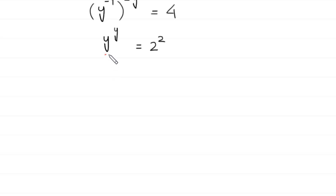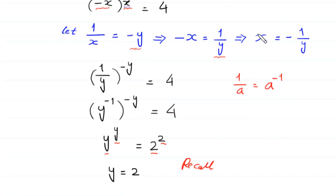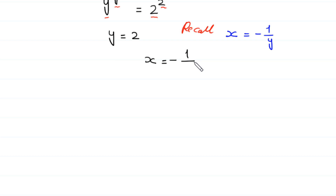Now, comparing base with base and power with power, we conclude that y is equal to 2. Recalling that x is equal to negative 1 over y, to find the value of x we put the value y equals 2: x is equal to negative 1 over 2. So this is the answer — the value of x is negative 1 over 2.